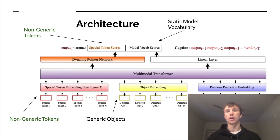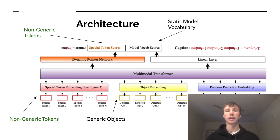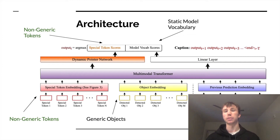This is the architecture diagram of our proposed approach. We contribute two primary changes to the baseline model. First, we add non-generic tokens as an input in addition to traditional object detection. Second, we append the non-generic tokens to the model vocabulary at inference time. This allows the captioning model to select between both the traditional model vocabulary and the newly discovered non-generic terms.